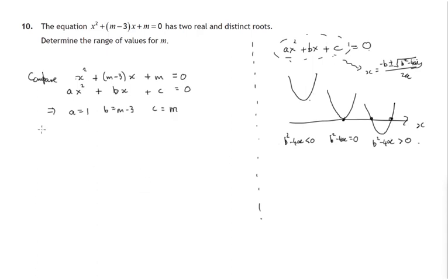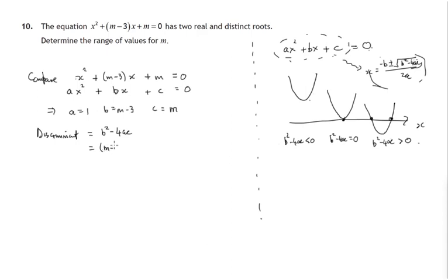So what can we say about the discriminant? In the general case ax squared plus bx plus c, the discriminant is b squared minus 4ac — the number under the square root sign in the quadratic formula. In this case that gives us (m minus 3) squared minus 4 times 1 times m.